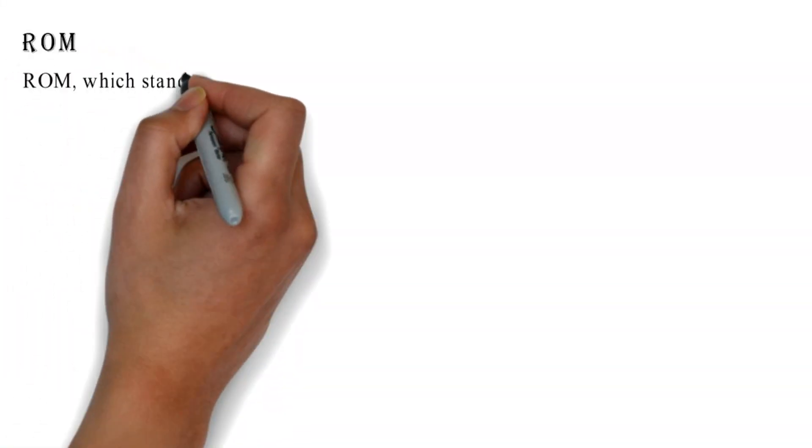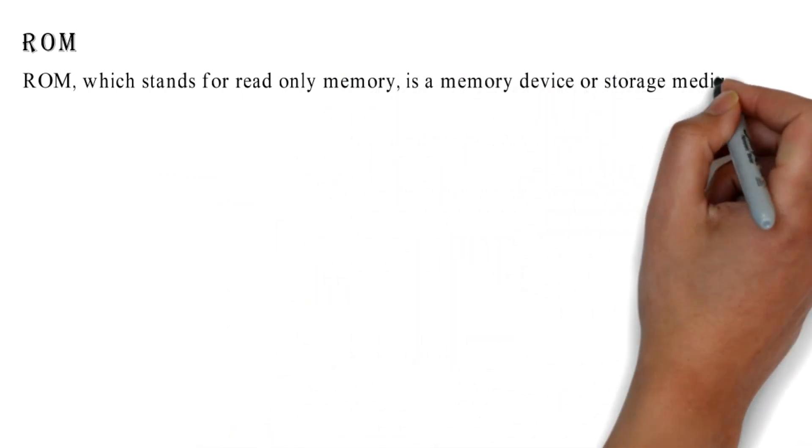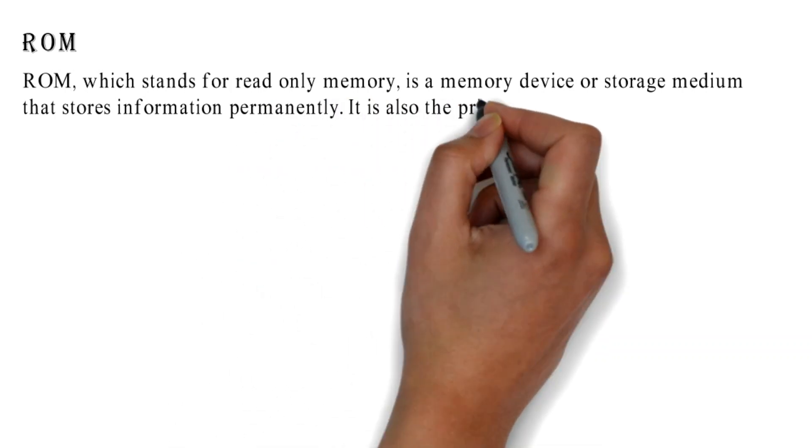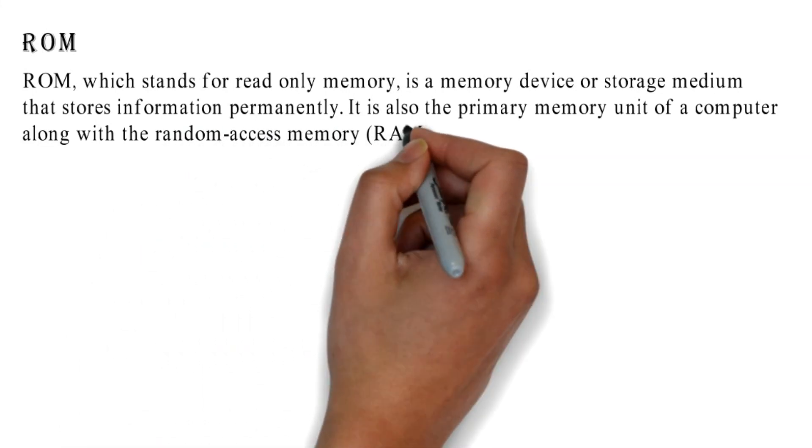ROM, which stands for read-only memory, is a memory device or storage medium that stores information permanently. It is also the primary memory unit of a computer along with the random access memory, RAM.